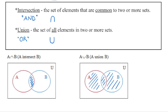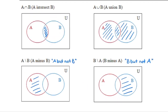Think of the union symbol as a bowl that contains all sections: all elements in A only, or A and B, or B only. So all of the elements in A or B are contained within that shaded region of the diagram.